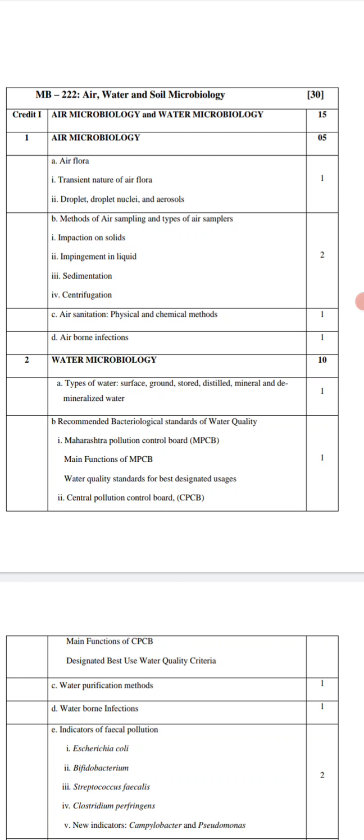Part C is water purification methods. Many methods are used at home, such as boiling water up to 100 degrees Celsius to kill all germs. Other methods include RO systems which directly purify water, chlorination where chlorine treatment is given to water supply, distillation, filtration, and ready-made purifiers. We will study all these water purification methods.